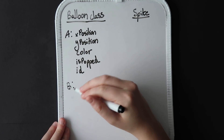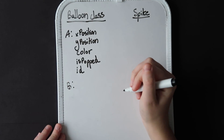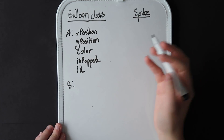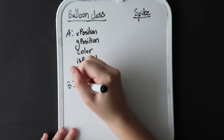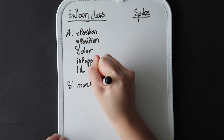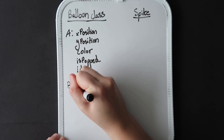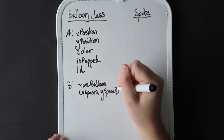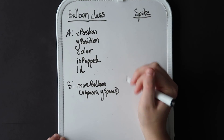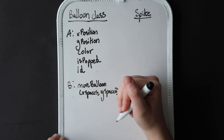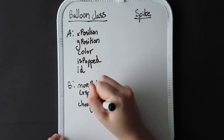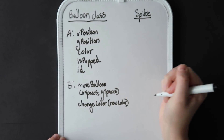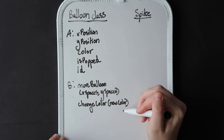We also want to define the behavior — what do we want these balloons to be able to do? We want them to be able to move on the screen and we want them to be able to change colors, from red to blue or orange. So let's write move balloon as a functionality, with inputs being the number of X spaces and Y spaces we want to move the balloon — for example, five spaces right and two spaces down. Another behavior is to change the balloon's color, taking the new color as input.